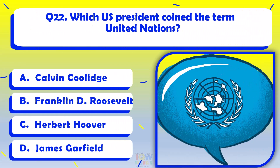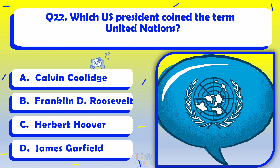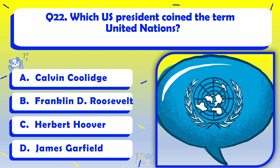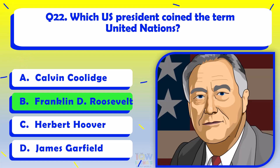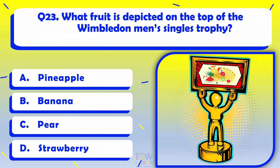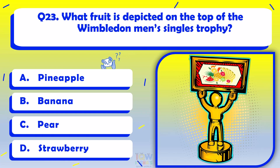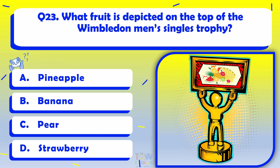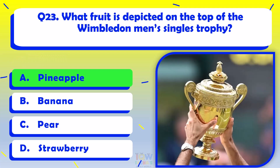Which U.S. president coined the term United Nations? Franklin D. Roosevelt. What fruit is depicted on the top of the Wimbledon Men's Singles Trophy? Pineapple.